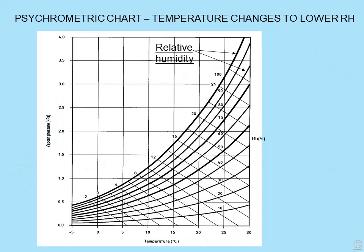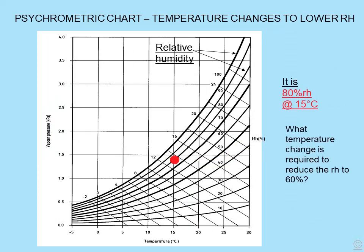We can also use a psychometric chart to look at temperature changes needed to achieve a lower relative humidity. For example, imagine it is 80% relative humidity at 15 degrees. What temperature change is required to reduce the relative humidity to 60%? We mark the 80% line and 15 degrees on the chart, then simply project the line horizontally across to the 60% RH mark and drop a perpendicular. This tells us that in order to get a relative humidity down from 80% RH at 15 degrees to 60%, we need to increase the temperature to 20 degrees.